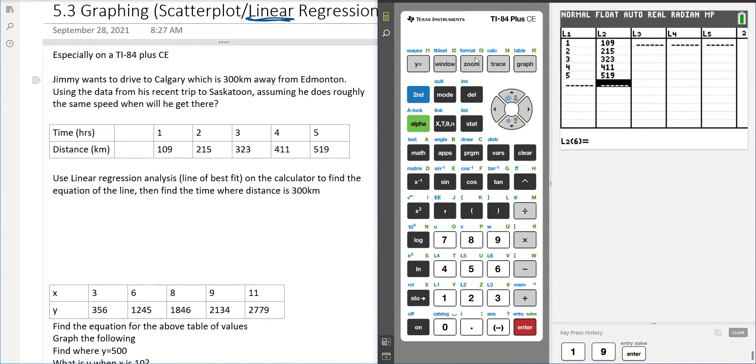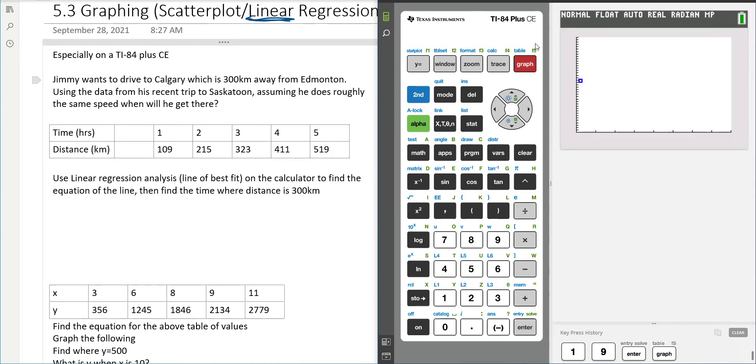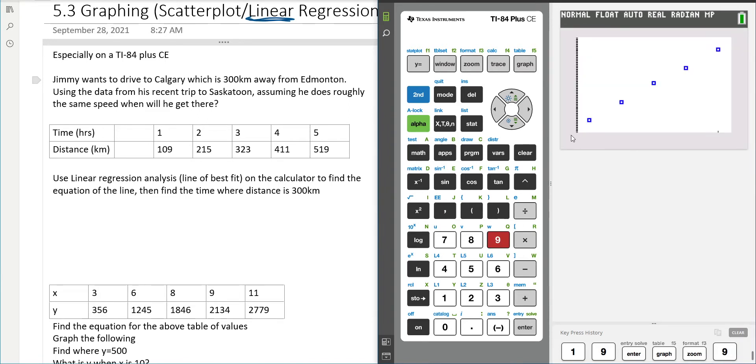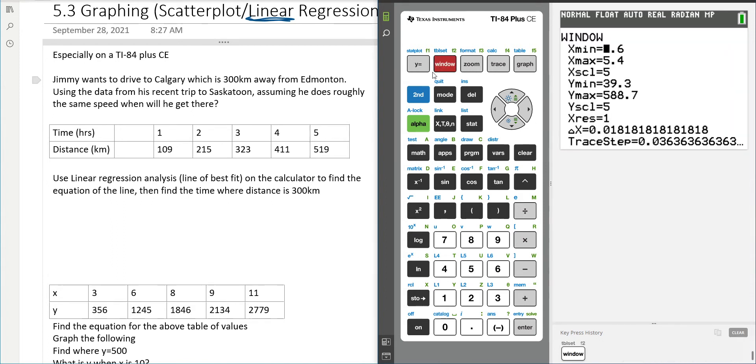So now what we're going to do is we can try graphing, but it's not going to necessarily show us what we want. We only have one data point. So we press zoom and then we want to go to zoom stat which is zoom 9, so it's actually just making our window exactly some useful data points.